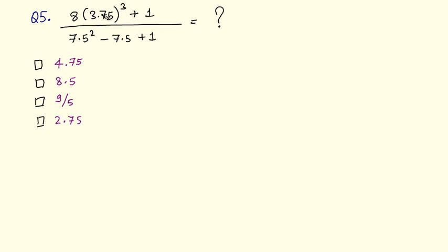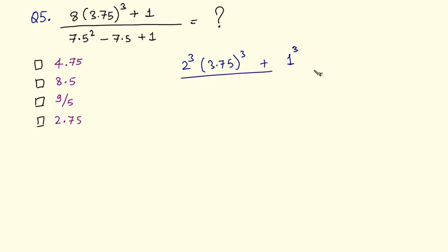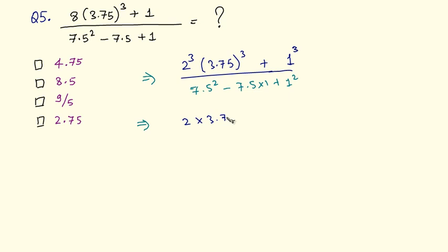Now let us end this video with a trickier question. If you take the cube of each number directly it becomes very difficult, so let's simplify. Since 8 is the cube of 2, we write 2 cubed into 3.75 cubed plus 1 cubed, upon 7.5 squared minus 7.5 into 1 plus 1 squared. Then 2 cubed into 3.75 cubed becomes 2 into 3.75 whole cubed, which is 7.5 cubed, plus 1 cubed.